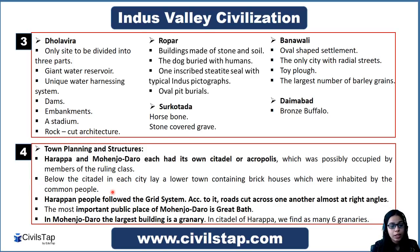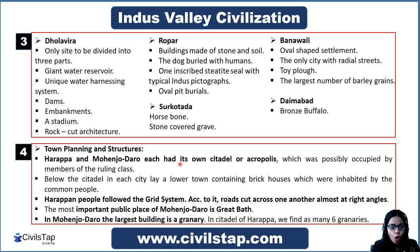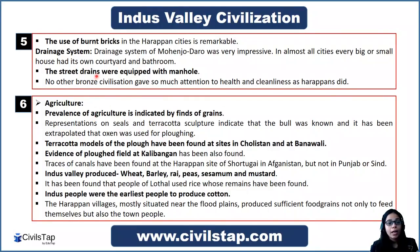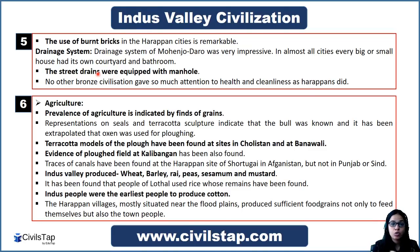The most important public place in Mohenjo-daro was the Great Bath, which is like a swimming pool used for ritual purposes. The largest building was a granary, and in the citadel of Harappa, as many as six granaries have been found. A remarkable feature of Harappan civilization is the use of burnt bricks, which was not used in contemporary civilizations of that time.